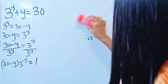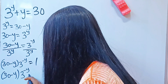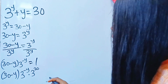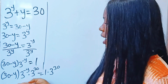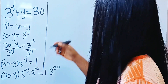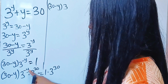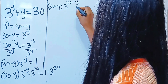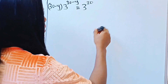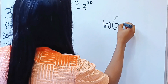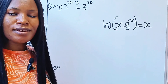Multiplying through, we get 30 minus y times 3^(−y) times 3^30 equals 1 times 3^30. Using the law of indices, we add the powers: 30 minus y multiplied by 3^(30−y) equals 3^30. Now this is starting to look like x·e^x, but recall that the base must be e, not 3.